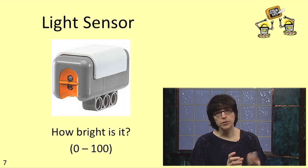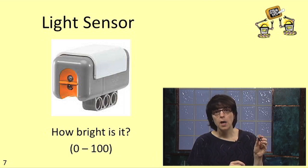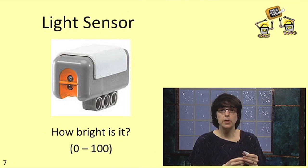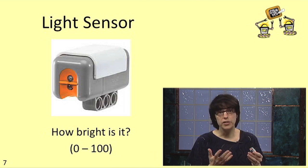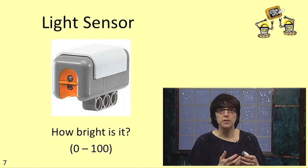This second sensor is called the light sensor. The light sensor tells the robot on a scale of zero to a hundred how bright it is in its environment. Zero means it's pretty dark and a hundred means it's super bright.